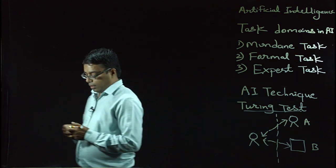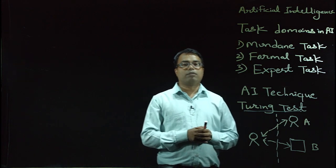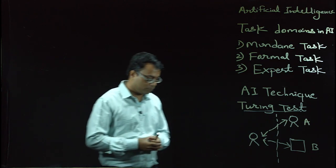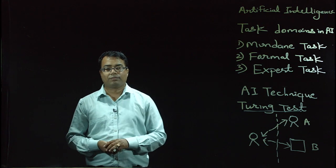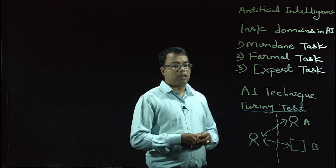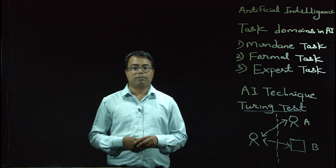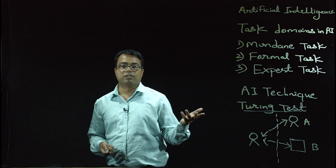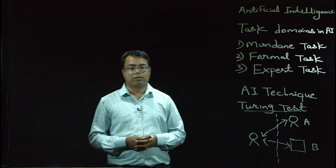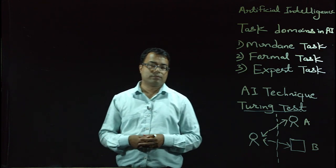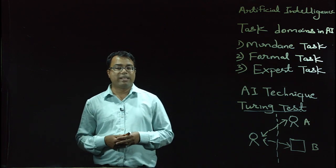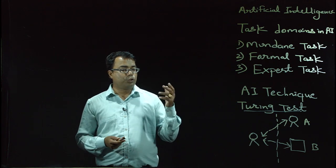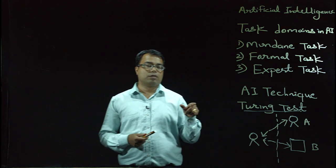Now, how to build AI systems? What are the ways to build a machine or system to solve a particular problem? There are four steps to build any AI system. First, define the problem — that is, what will be the initial states and what will be the goal states. Second, analyze the problem. Third, isolate and represent the task knowledge that is required. And the final step is to choose the best problem-solving technique and apply it to solve that particular problem.